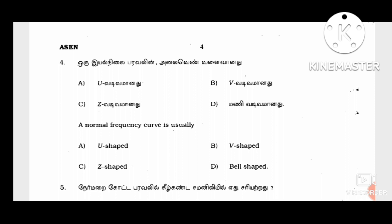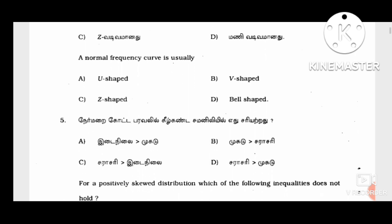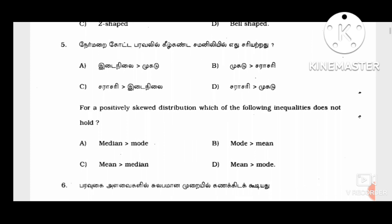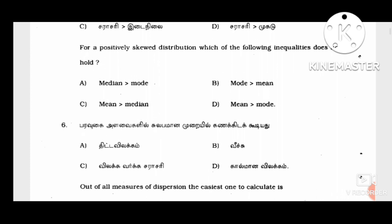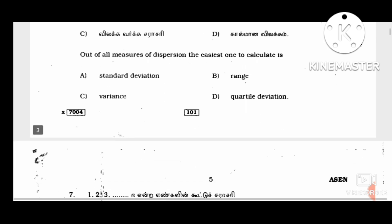The normal frequency curve is usually the bell-shaped curve — U-shaped or V-shaped options given. The bell-shaped curve is the correct answer. This is a very important question. The Chebyshev inequality — which following inequality does not hold? What is the inequality? Out of all measures of dispersion, one cannot be calculated.